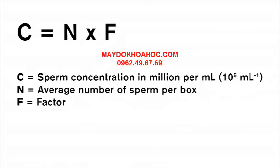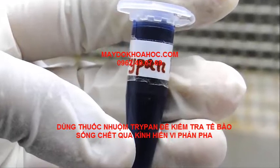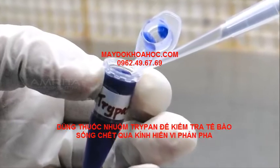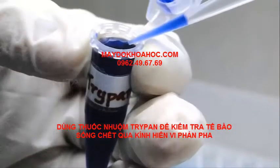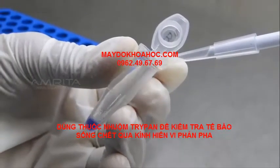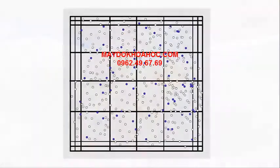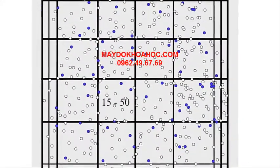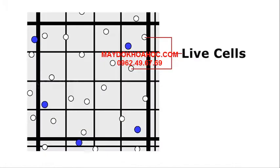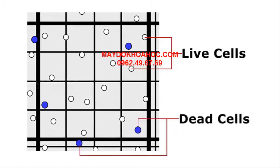N is the average number of sperm per box, and F is the F factor for that magnification. Live cells appear colorless and bright or refractile under phase contrast, while dead cells stain blue and are non-refractile. Keep a separate count of viable and non-viable cells.